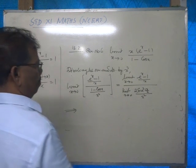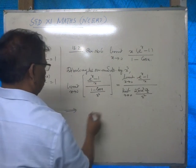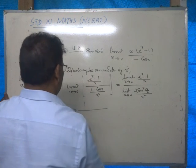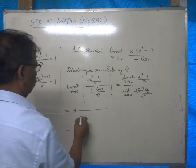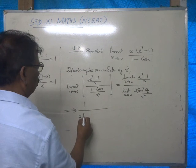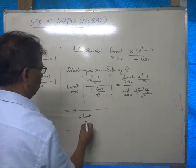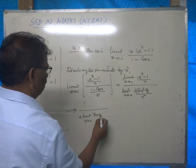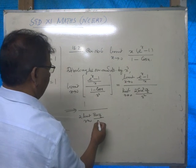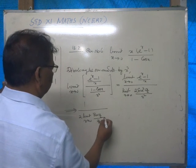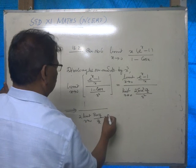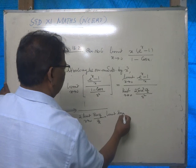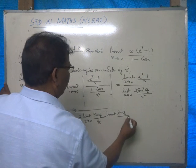The numerator limit is 1, since limit x tends to 0 of e raised to x minus 1 by x equals 1. The denominator becomes 1 over 2, times limit x tends to 0 of sin(x/2) by (x/2), times limit x tends to 0 of sin(x/2) by (x/2).